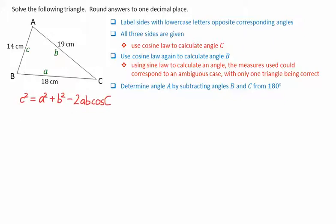First of all, to figure out angle C. C squared equals A squared plus B squared minus 2AB cosine angle C. We can rearrange this for cosine of angle C, giving us C squared minus A squared minus B squared divided by negative 2AB.